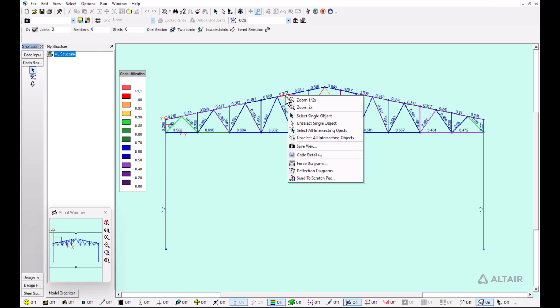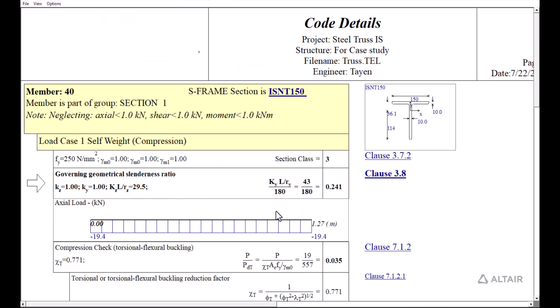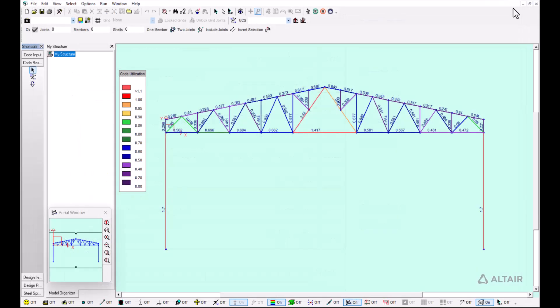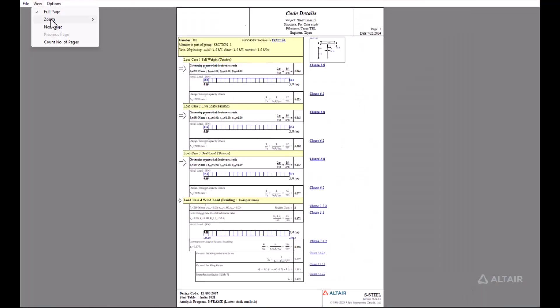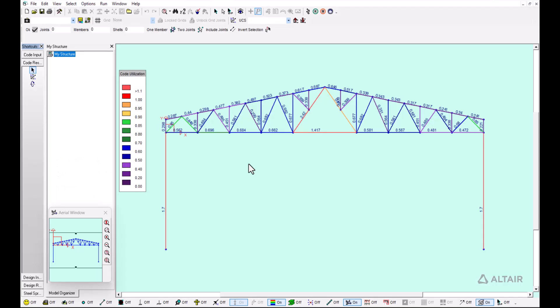We can see that the members we selected for design, like this top member over here, is passing the code check with a 0.35 utilization. This is very low, a very good utilization, so we can confirm that these checks are similar to what we calculated. Then we take the bottom chord that we designed and we can see that it has a 0.69 utilization, so it's also good and confirms what we did.